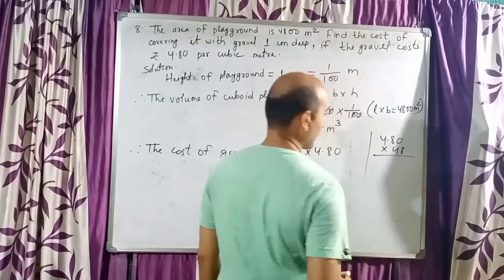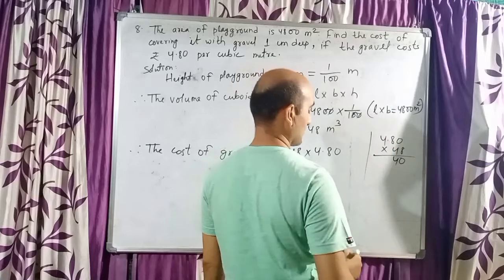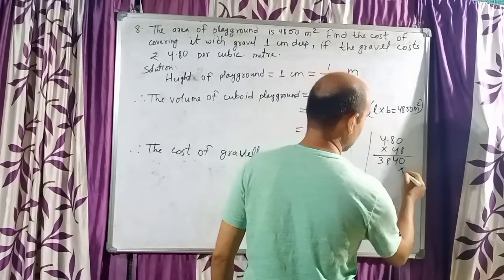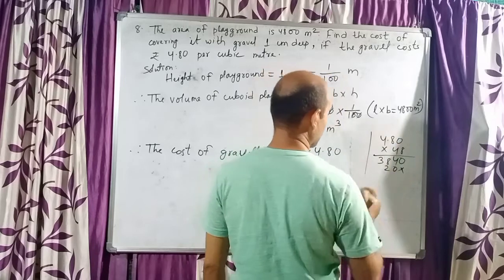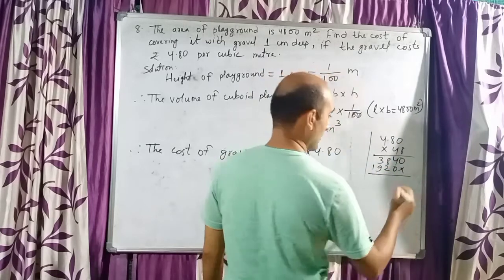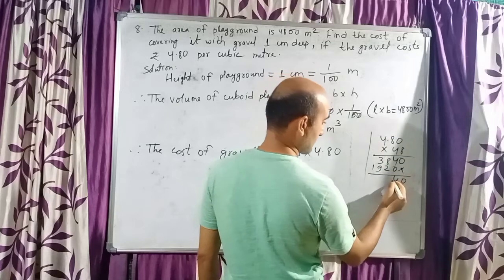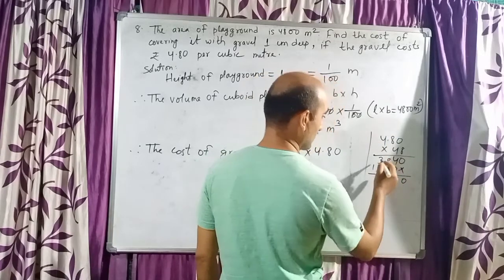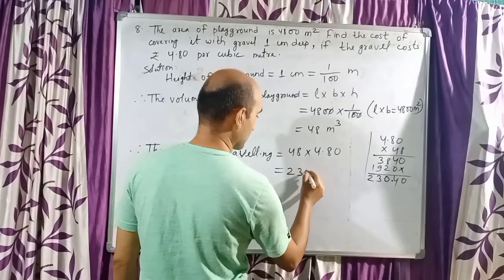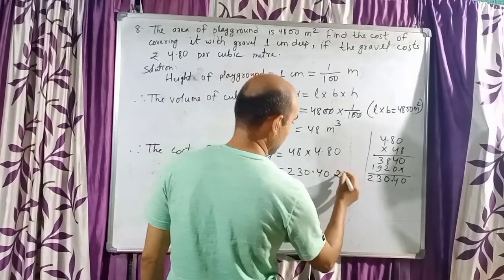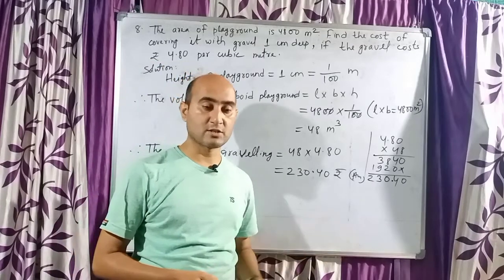Now we do the rough work: multiply 4.80 by 48. Working through the multiplication: 8 into 0 is 0, 8 into 8 is 64, carry 6; 8 into 4 is 32 plus 6 is 38. Then 4 into 0 is 0, 4 into 8 is 32, carry 3; 4 into 4 is 16 plus 3 is 19. Placing the decimal after two digits, our answer is 230 rupees 40 paise. This is our cost of graveling. Thank you, children.